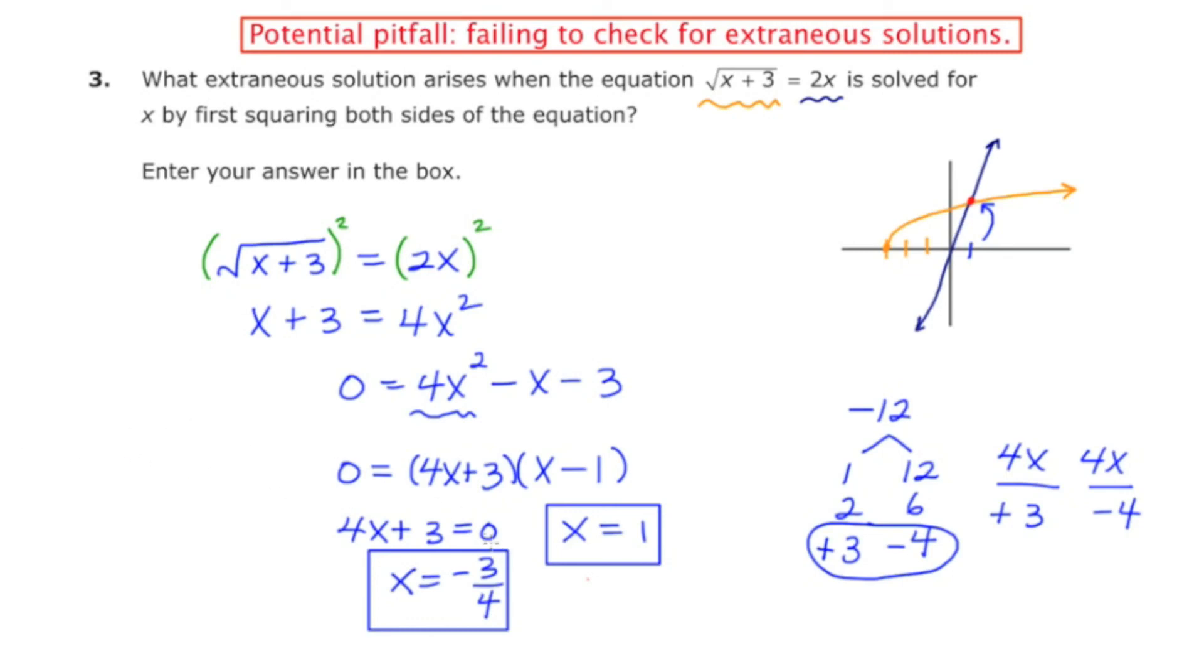If you were to take that answer and plug it into the original, you're not going to get a true statement. So the answer that they're looking for is the answer that's extraneous, which is x = -3/4. So I'm going to put a red box around that just so you know what the actual answer is. I'm going to put one more box just so we are completely on the same page. So the answer that I've triple-boxed is the answer that they want, x = -3/4. This is the extraneous solution. This is the answer that when plugged in would not validate the original equation.